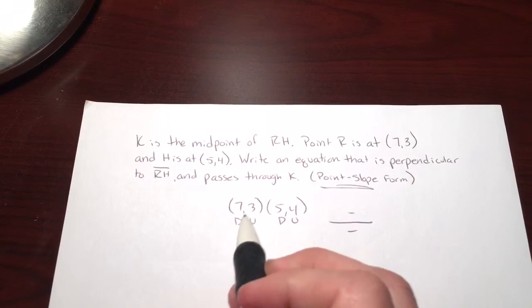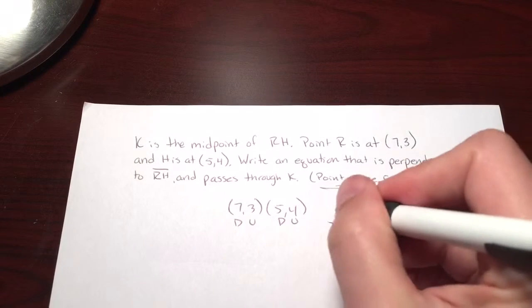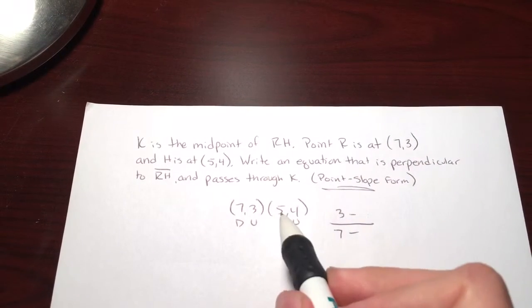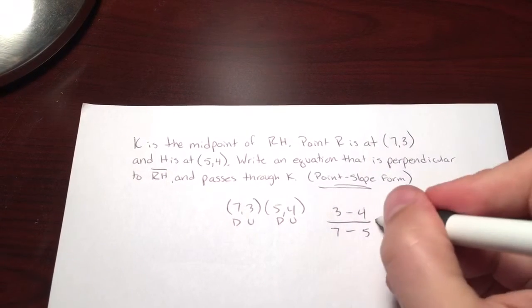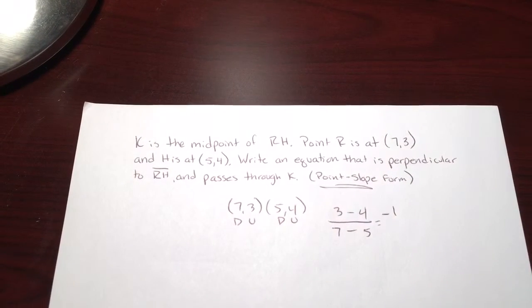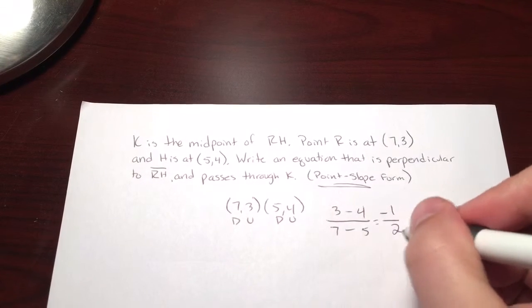So 7 goes down, 3 goes up, the 5 goes down, the 4 goes up. 3 minus 4, negative 1. 7 minus 5, 2.